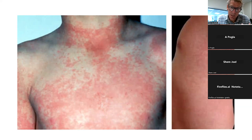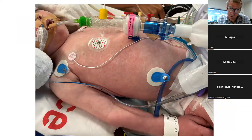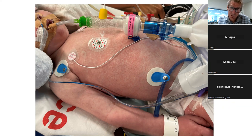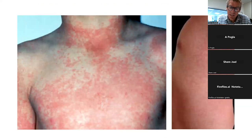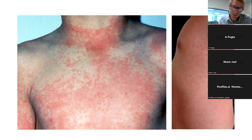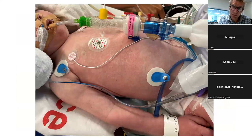Looking at the rash of a child with dengue and comparing it to a rash from a child I looked after just a few days ago — they look remarkably similar. You could imagine the second child might have dengue, but in fact this child had group A streptococcal septic shock. The rash of dengue and the rash of measles, rubella, and other viral exanthems can look very similar to other infections.